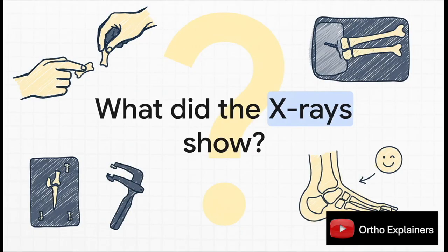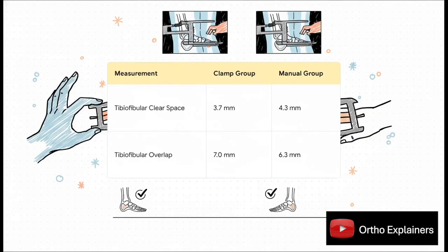Okay, so let's look at the first piece of evidence. How did the repairs actually look on a medical image? Which method got that picture-perfect alignment we were talking about? On the x-rays, there was a clear winner. If you look at the measurements, the clamp group had a smaller gap between the bones and more overlap. What does that mean in plain English? The clamp produced a tighter fix. It was statistically significant. So based on this evidence alone, you'd probably think, case closed, the clamp is way better.